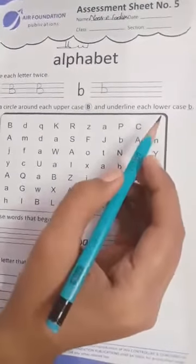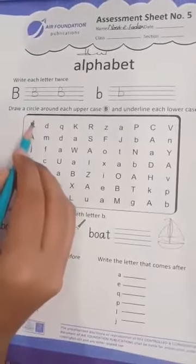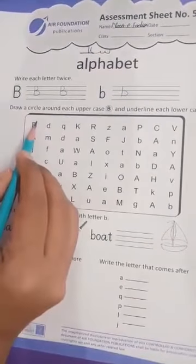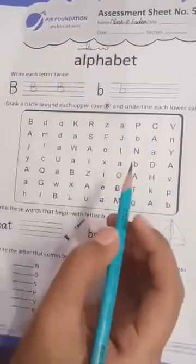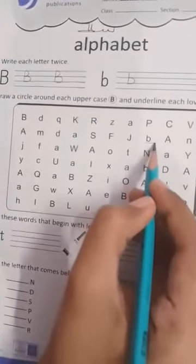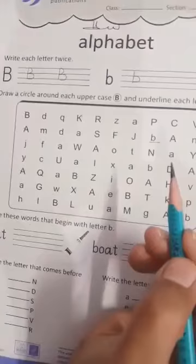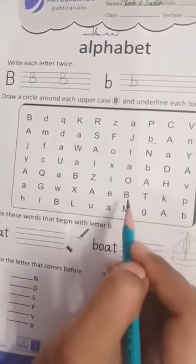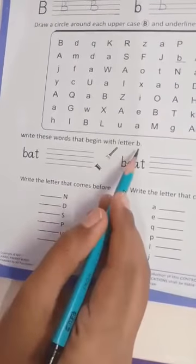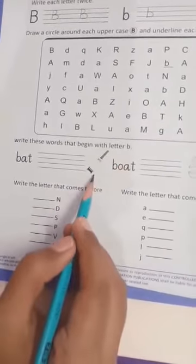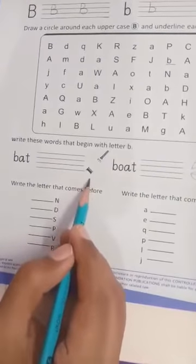This way, we have all letters circle. When you complete this work, come down and write these words that begin with letter B. First, let's look at the picture. Which picture is this?